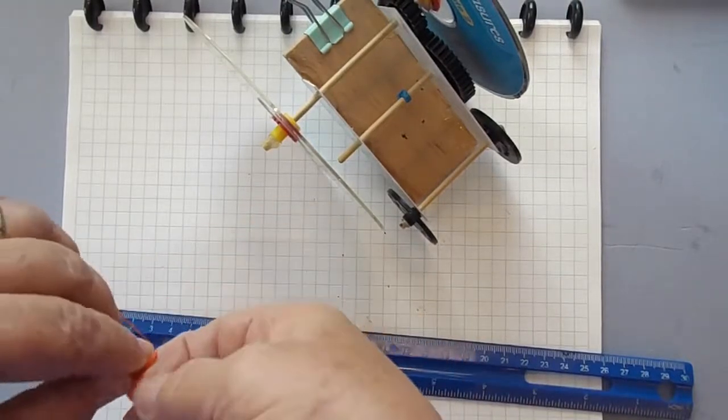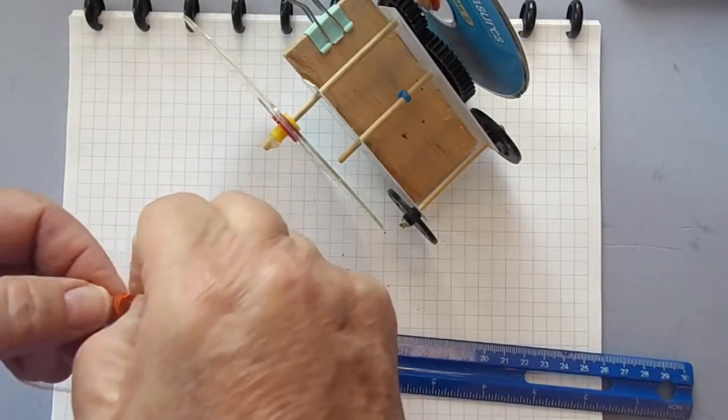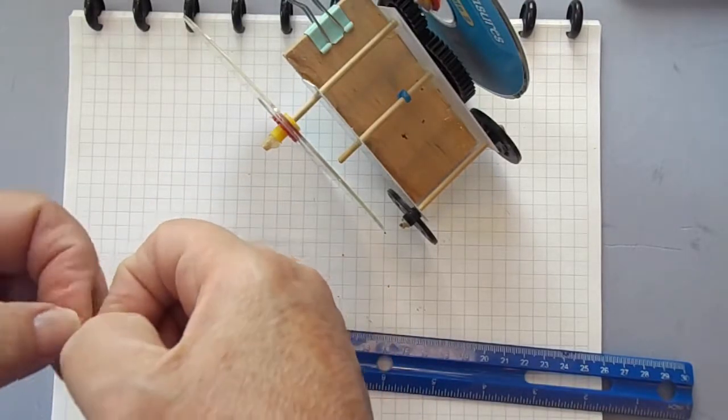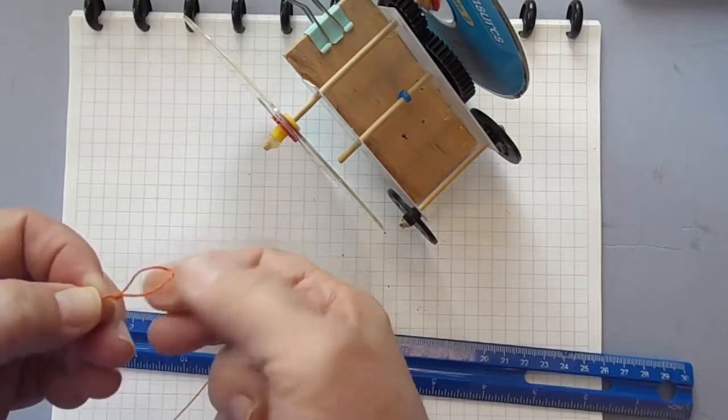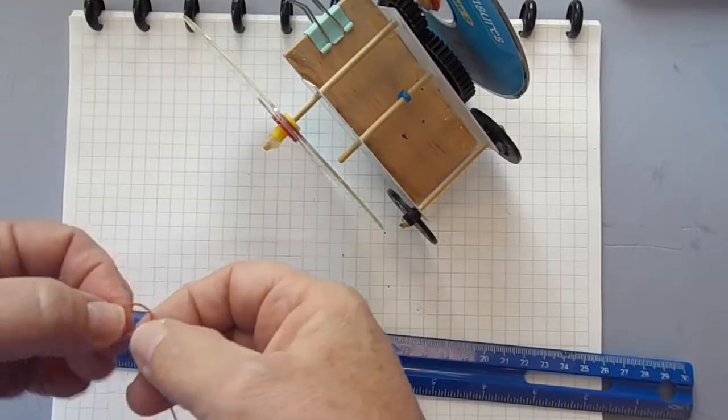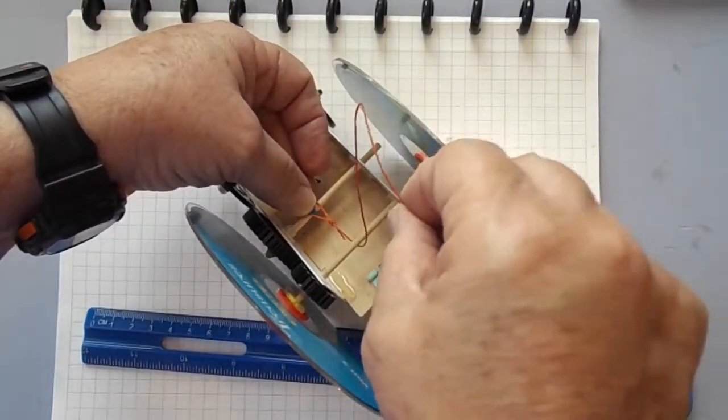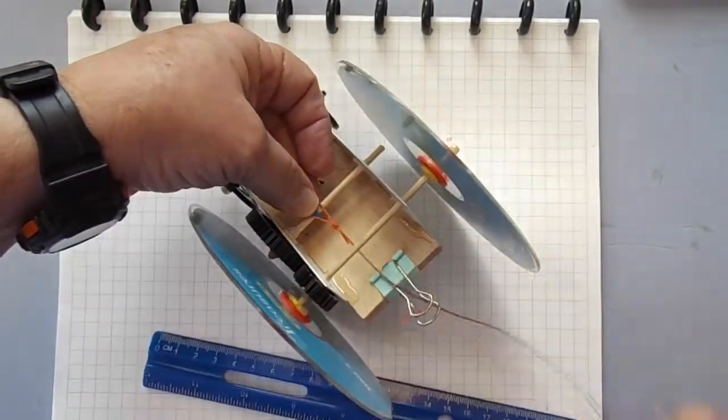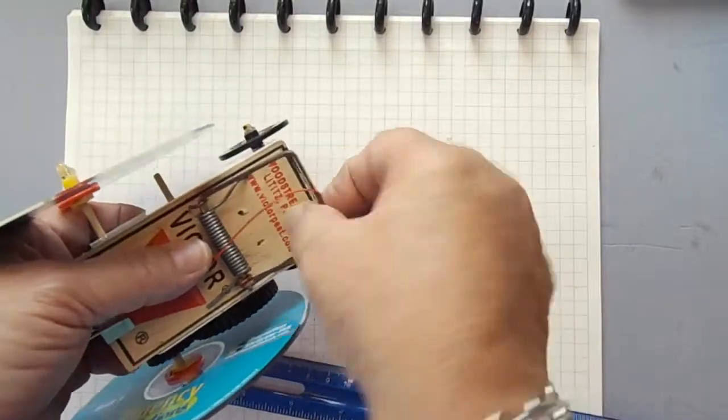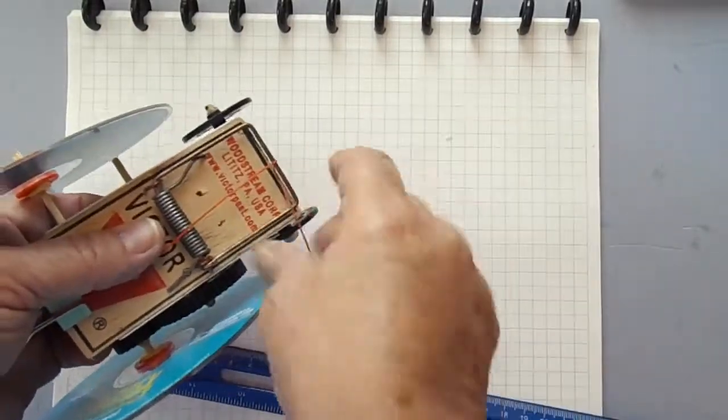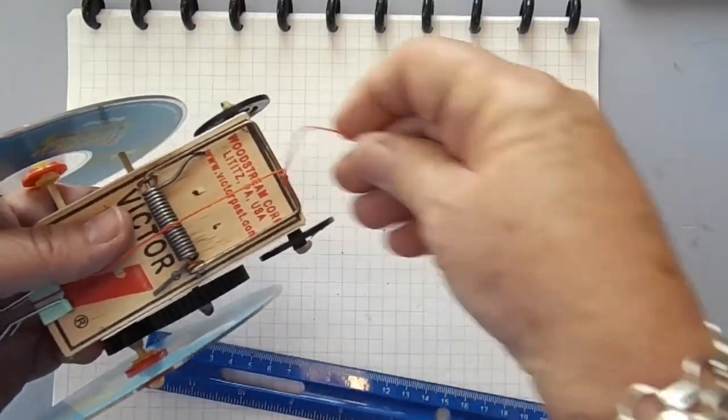Tie a one centimeter to 1.4 centimeter long overhand loop in one end of a 30 centimeter long non-stretchy string. This is simply a granny knot like one you would tie in an inflated balloon. Drop the loop over the stub of the tie wrap and thread the free end of the string between the mousetrap and the axles, through the binder clip handles, and around the end of the mousetrap towards the uncocked bail. Tie the string around the bail with an adjustable knot known as a taut line hitch.